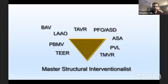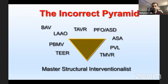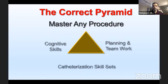Currently, if you go to a conference like TCT and see all the structural fellows talking, most of the talk will be about how many procedures have you done — have you done tricuspid clip, have you done TMVR. The focus is mostly on how many procedures of different types and kinds you have done, and that will supposedly make you the master structural interventionalist.